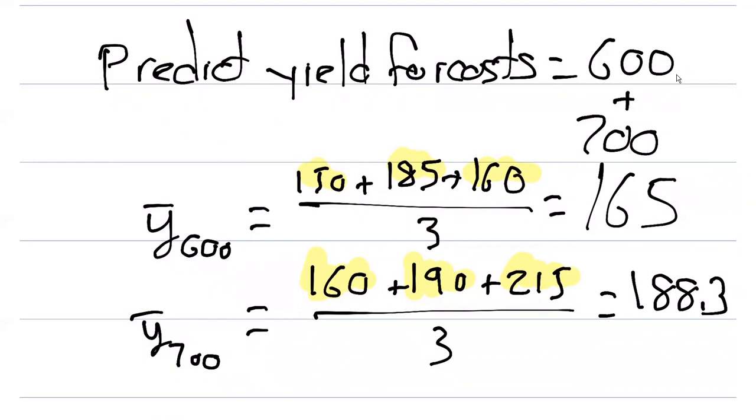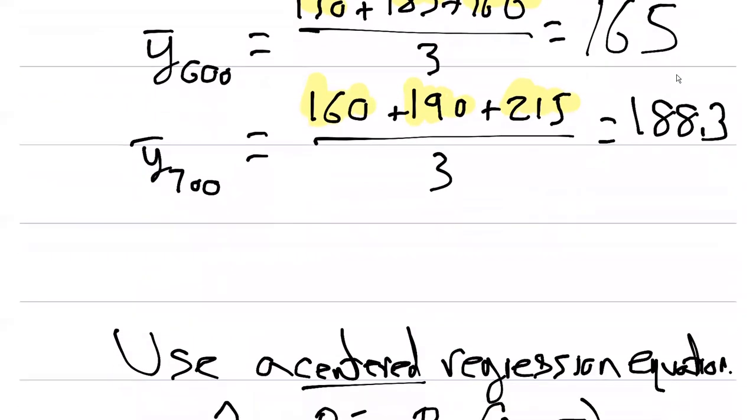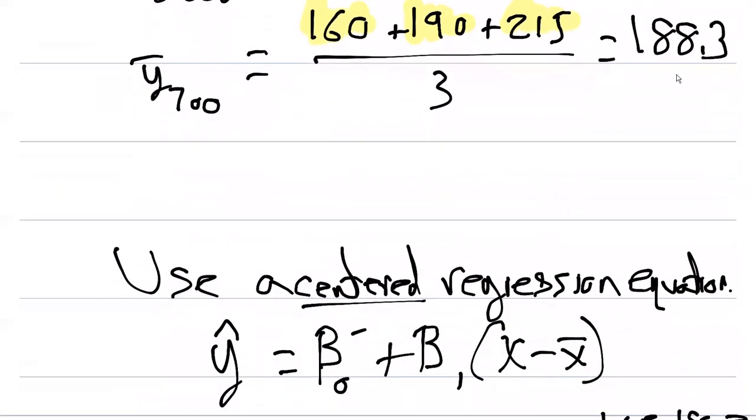These will be important values as we move forward. To do this problem, we're going to use what we call a centered regression equation. Our value for y hat is going to be beta zero prime plus beta one times the value x minus the mean value for x or x bar. This is common in a lot of regression to center the data.